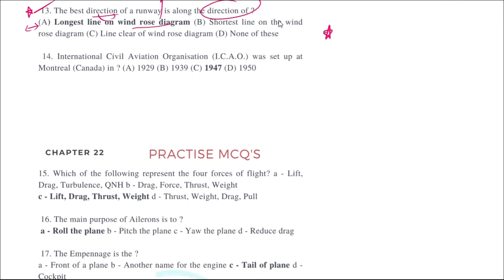ICAO — the International Civil Aviation Organization — was set up in Montreal, Canada, in 1947.